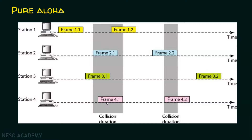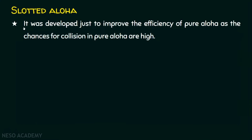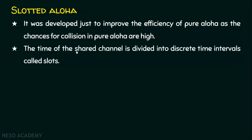Slotted aloha was developed to improve the efficiency of pure aloha, as the chances for collision in pure aloha are high. The throughput of pure aloha is 0.184, and we want to improve this efficiency. That is why we are in slotted aloha. The time of the shared channel is divided into discrete time intervals called slots.